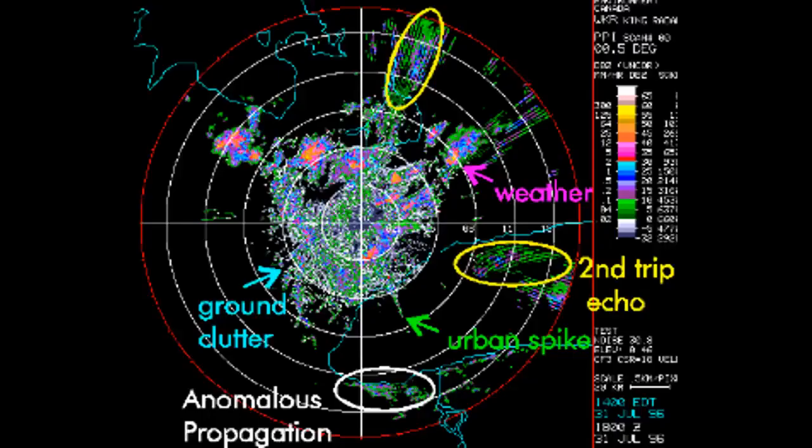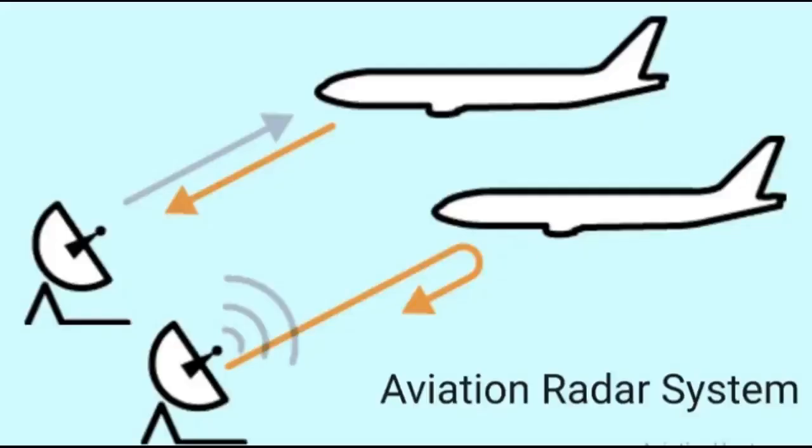These echoes can interfere with the radar's ability to detect and track targets of interest such as aircraft or ships.